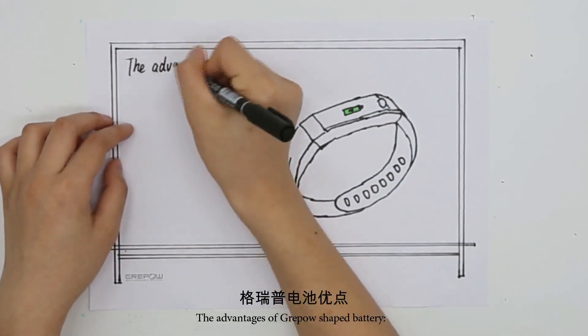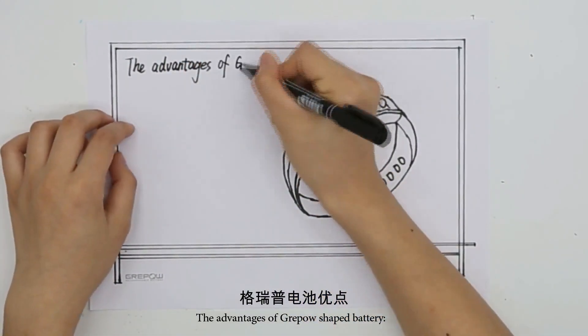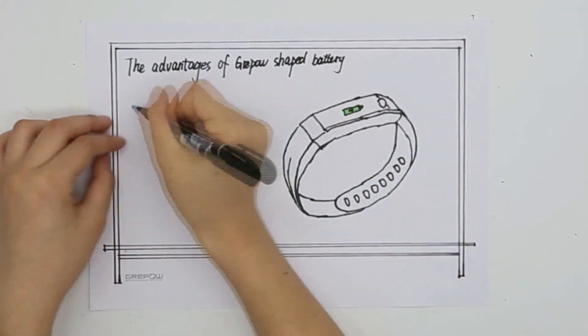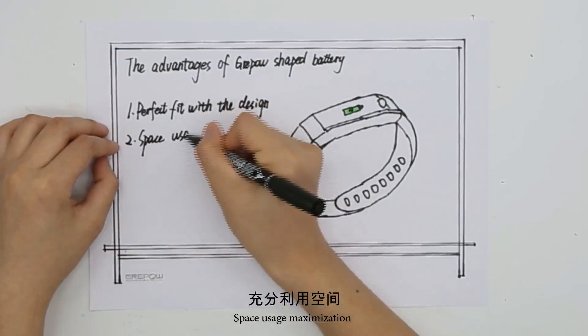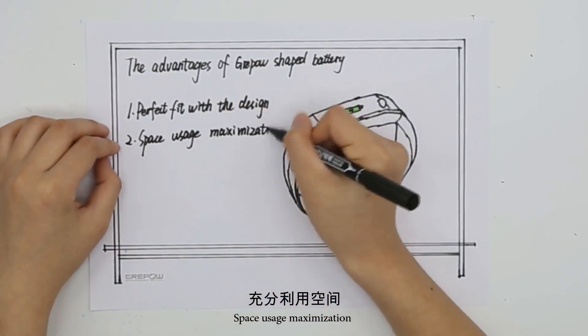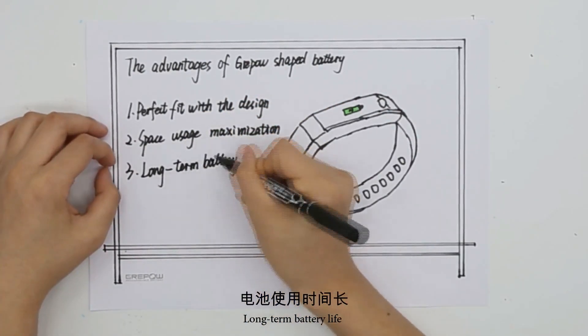The advantages of Graypulp shaped battery: perfect fit with the design, space usage maximization, long-term battery life.